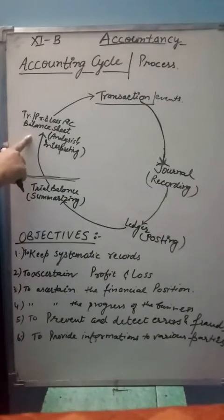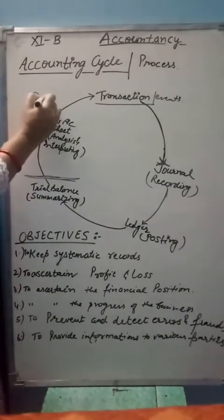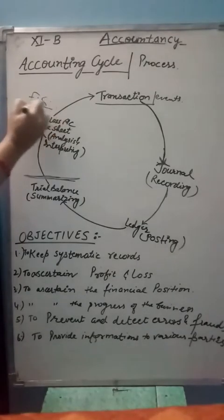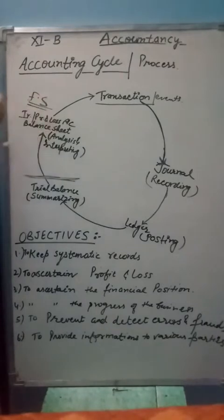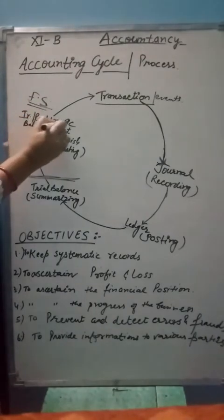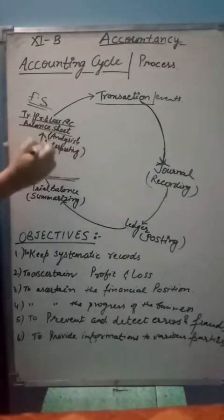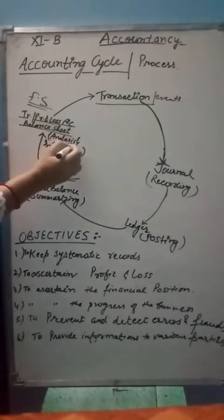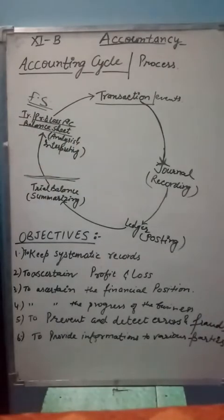Then we make our financial statements. In our financial statements, we have the trading account, profit and loss account, and balance sheet. We call this analysis and appropriation.